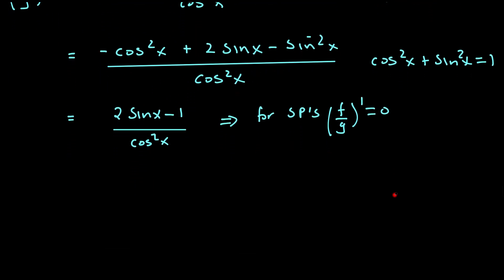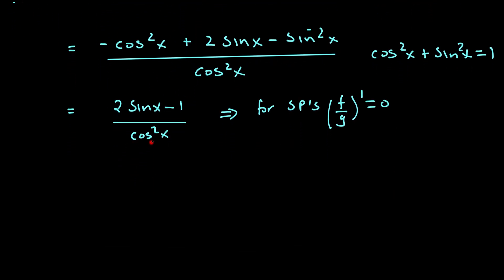Now we need to be careful with this because we can't make cos²x equal to 0, that would be undefined. So it's just the top bit. If we solve this trigonometric equation, we get 2sin x - 1 = 0, so sin x = 1/2, therefore x = π/6.